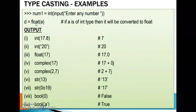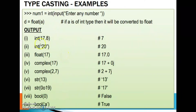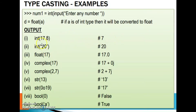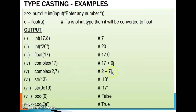Type casting examples: int(17.8) gives 17; int('20') converts the string '20' to integer 20; float(17) gives 17.0; complex(17) gives 17+0j; complex(2,7) gives 2+7j with real and imaginary parts. str(13) converts the integer 13 to string '13'. str(0o19) — the octal number 0o19 has decimal equivalent 17, so it converts to the string '17'. bool(0) gives False; bool(a) gives True.